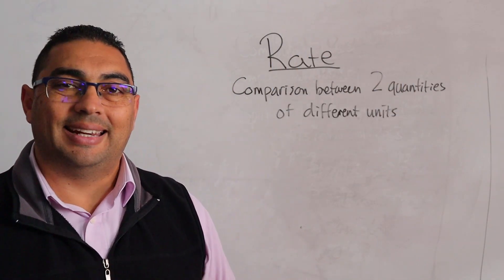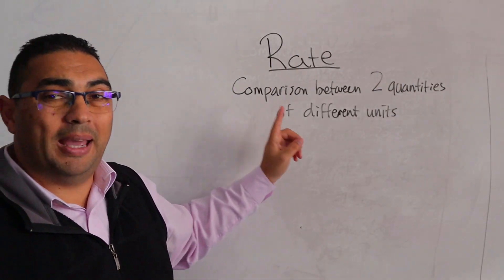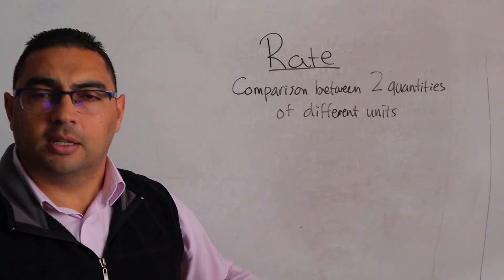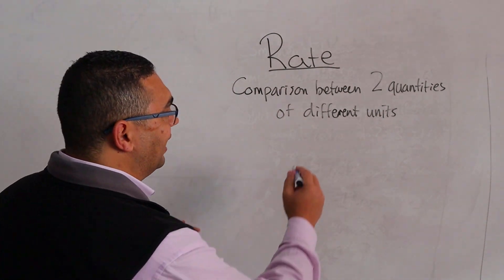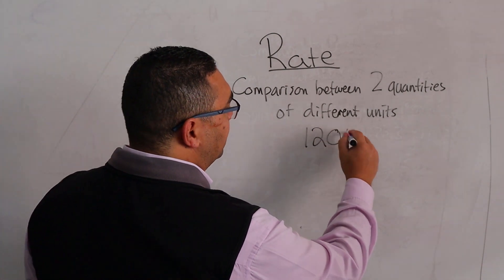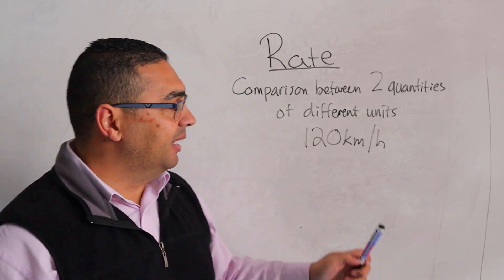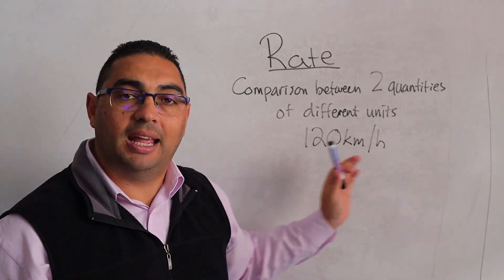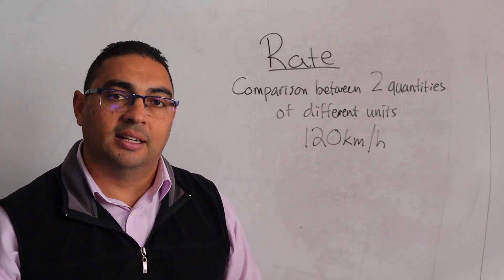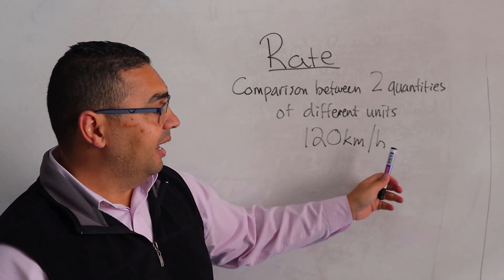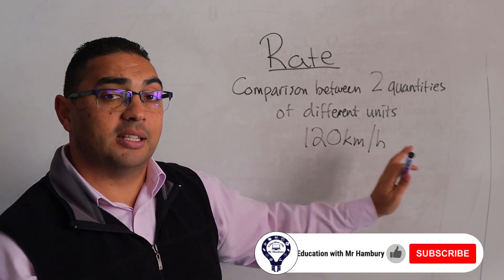Today we're talking about rate. Rate is a comparison between two quantities of different units. For example, 120 kilometers per hour - it's telling me the rate or speed at which this person is traveling. I've got two different units: kilometers and hours, so kilometers per hour.